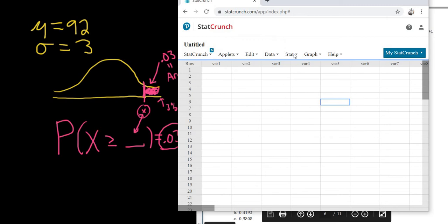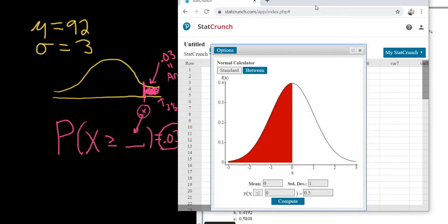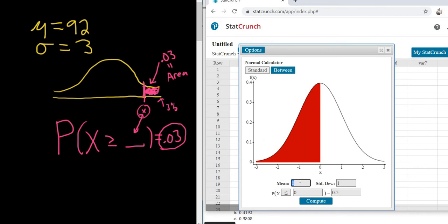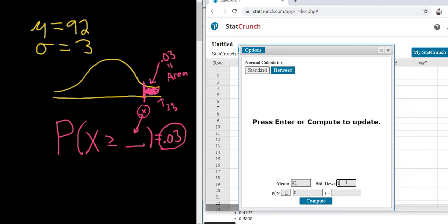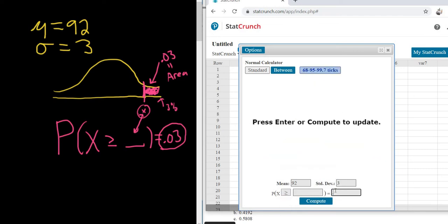So you go to Stat, Calculators, Normal, and then you type in the mean, which is 92, type in the standard deviation, which is 3, change it to greater than or equal to, and then you want to put the area in the second box, right, like this. Okay.